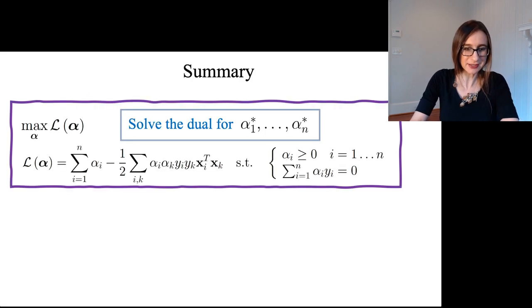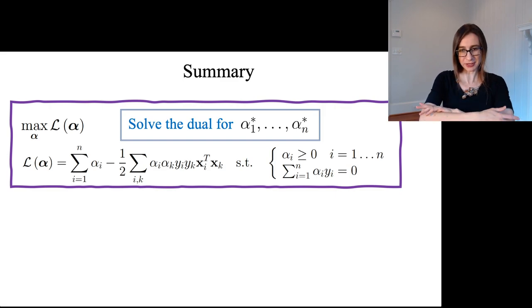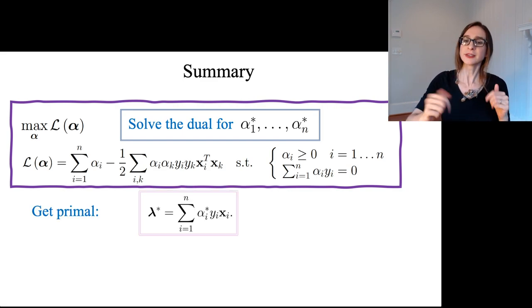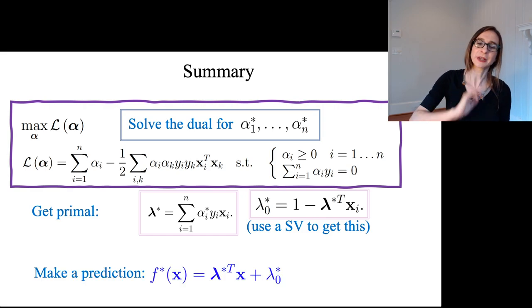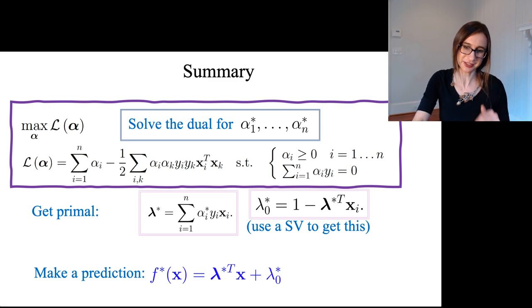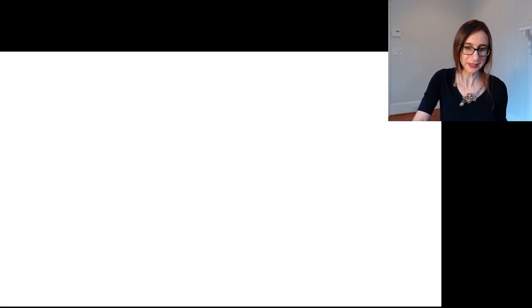So, just to summarize, to solve the support vector machine optimization problem, we would solve the dual problem, get the alpha stars, use them to get the primal lambda star, grab a support vector and get lambda zero star. And once we have lambda star and lambda zero star, we can make predictions using those because those are what define f of x, which is our prediction function. We can make a prediction using f star, which is defined this way.